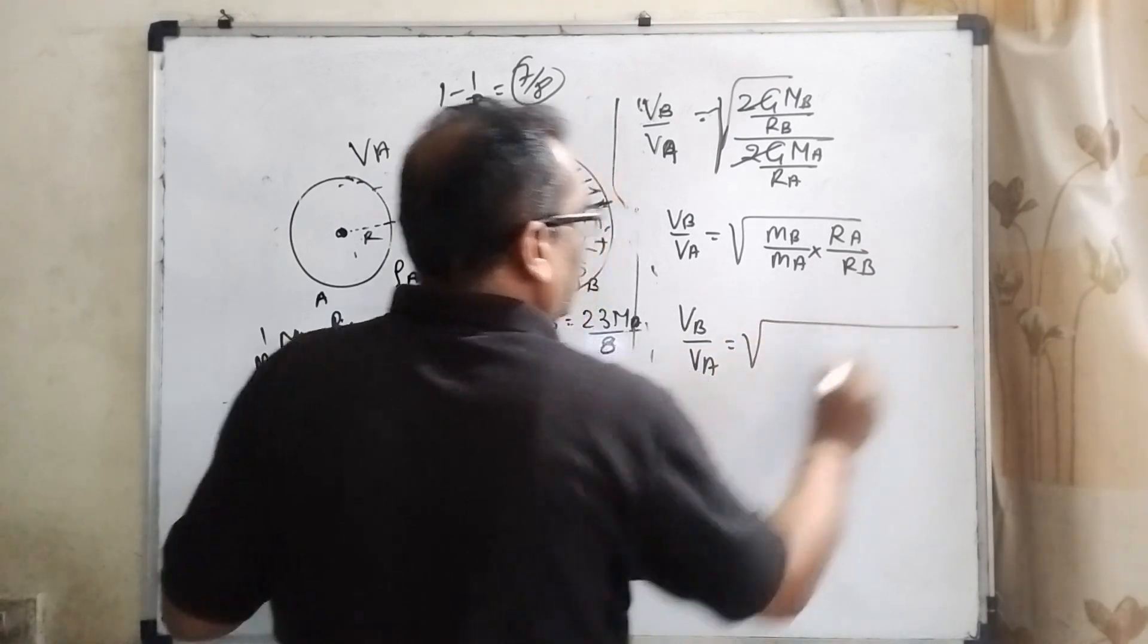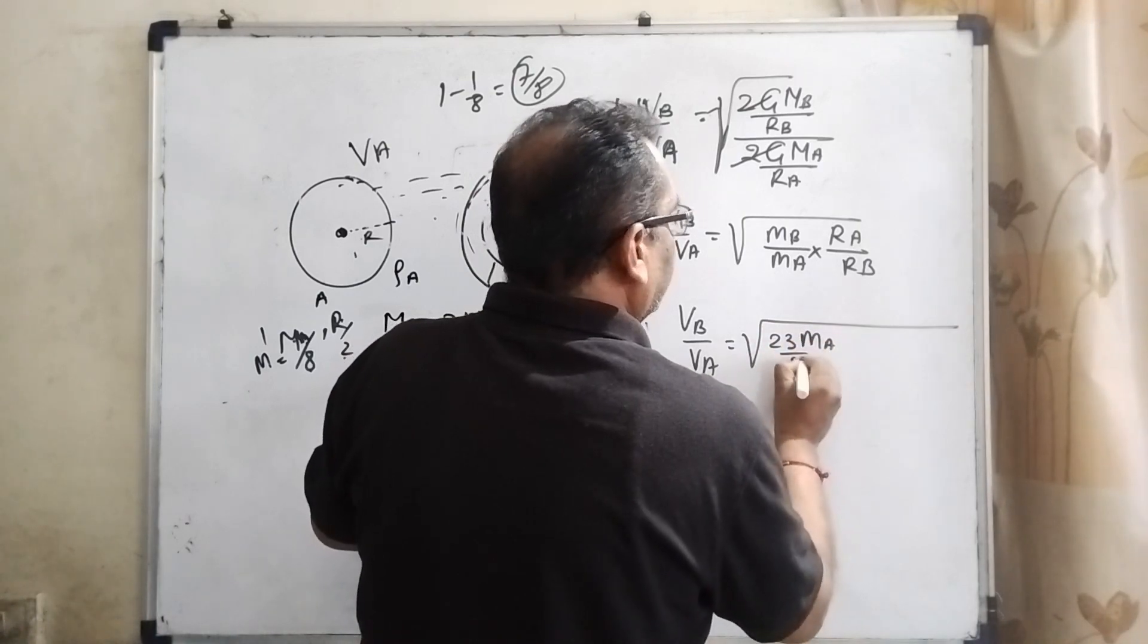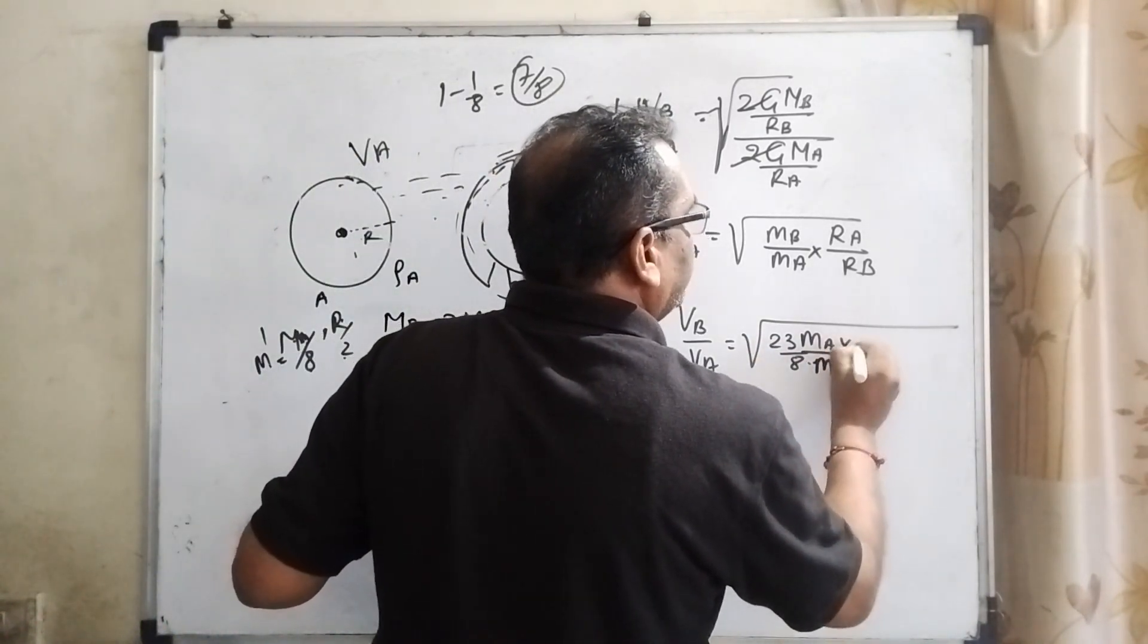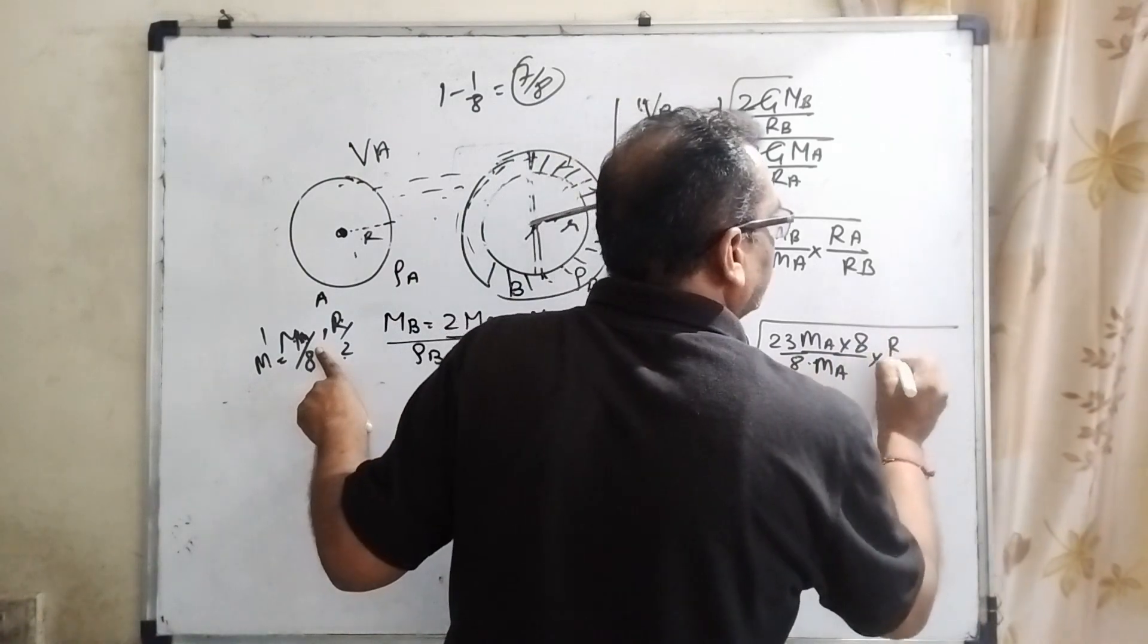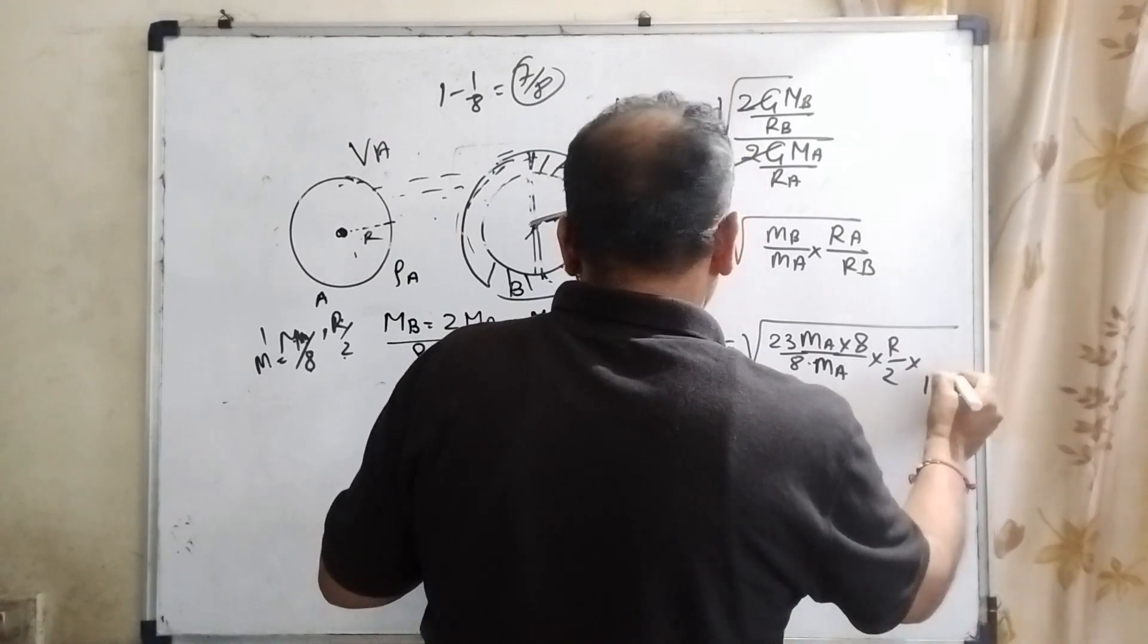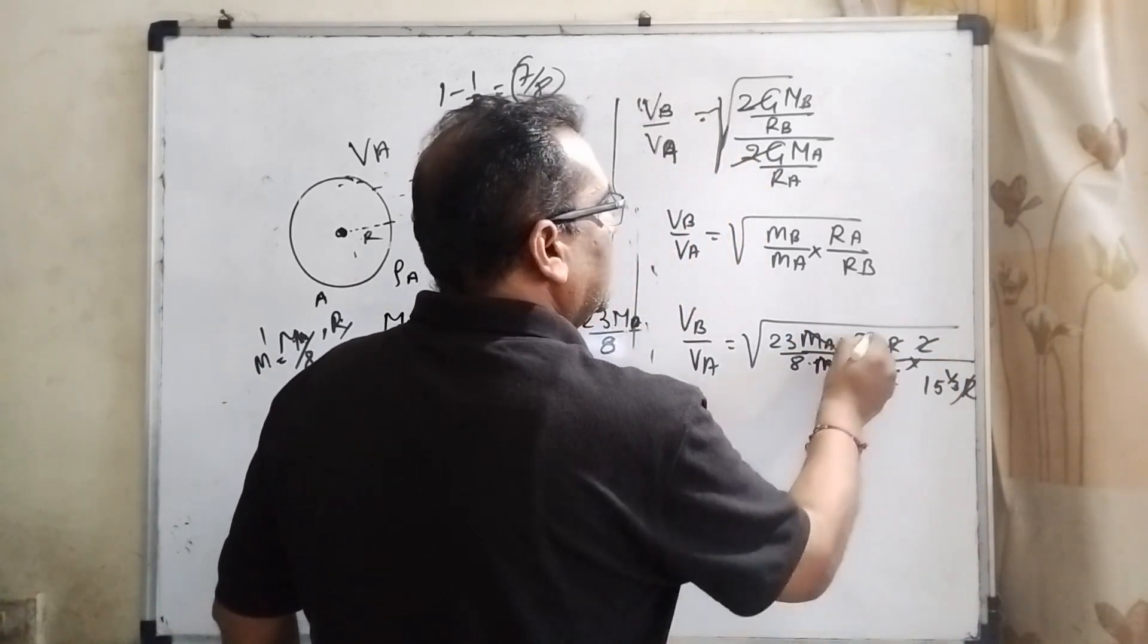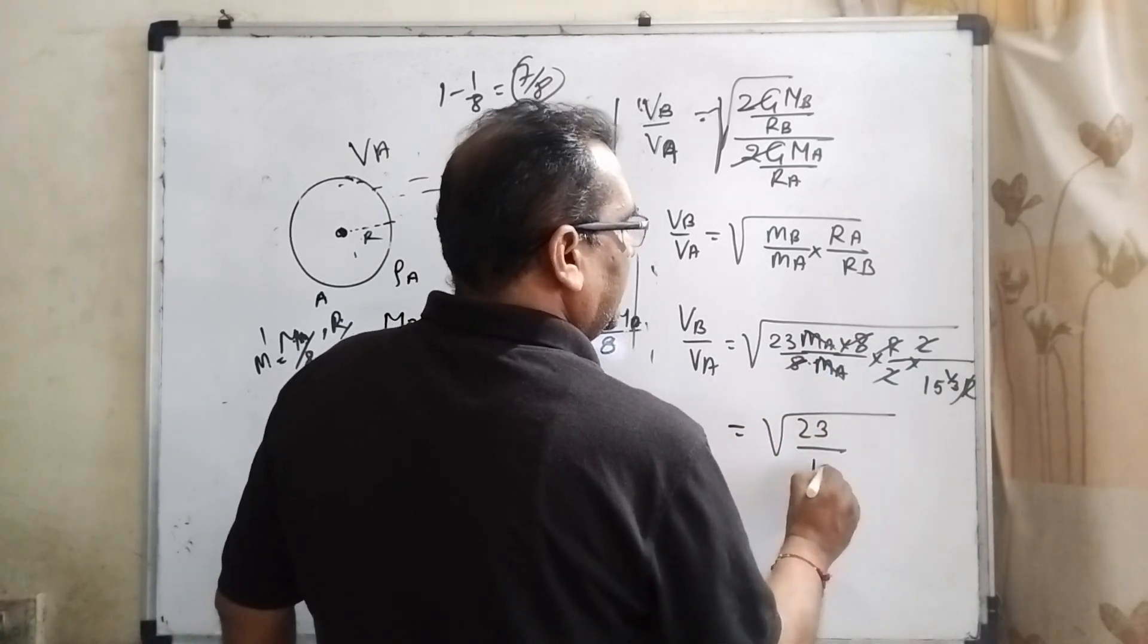Now substitute all values. What is Mb? 23Ma/8. What is Ma? Ma/8. Now Ra, what is Ra? Radius is R/2. And Rb is (15)^(1/3) times R/2. R cancels, 2 cancels, Ma cancels, 8 cancels. Now you can see your answer is root of 23 upon (15)^(1/3).